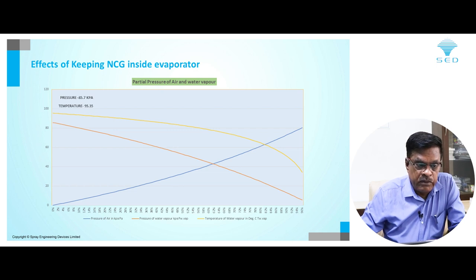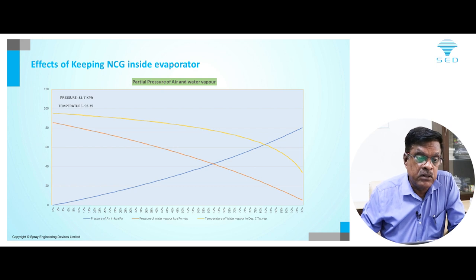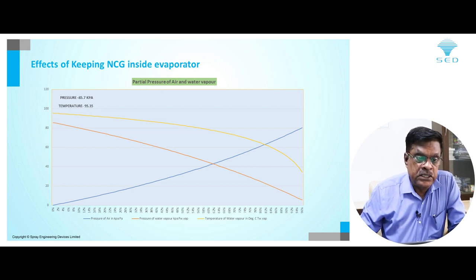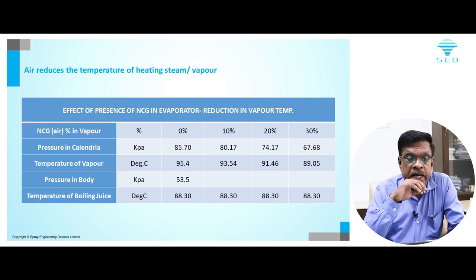As air increases, pressures and temperatures drop. At around 50–55 percent air, they can come down to 50 percent of their original pressures. When it reaches the bottom level, almost the entire calendria is occupied with air only. NCG almost eliminates evaporation if it is present in the evaporator.